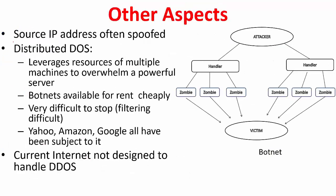This is how DOS attacks are typically handled in the networking space. There is an attacker who gets hold of some machines which act as handlers, and each handler in turn handles some group of machines called zombies. These zombies are the ones which target the victim by bombarding it with traffic. This is called a distributed denial of service attack. Because the victim is often powerful, you need to launch a powerful attack, so you make use of multiple machines to overwhelm a powerful server — this is called a botnet. These are available for rent cheaply, and it is very difficult to stop these attacks because you are getting bombarded from machines spread all over the world, making effective filtering very difficult.